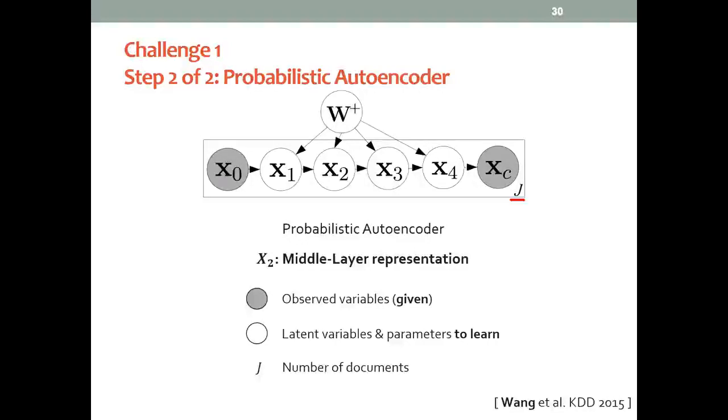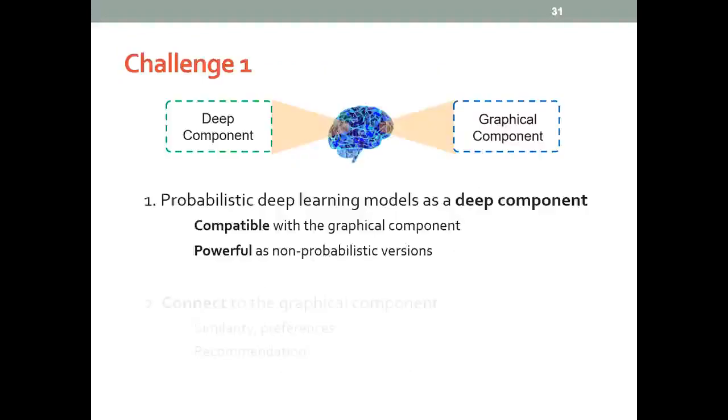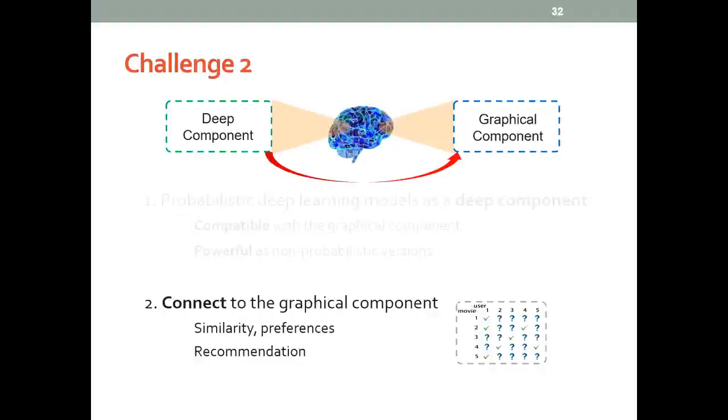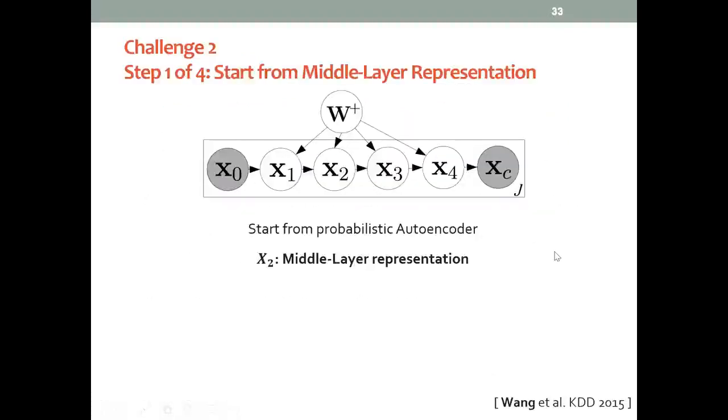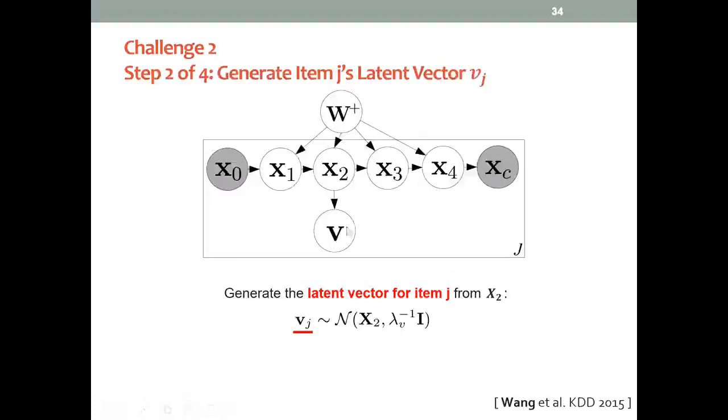Now that we have handled this first challenge, the next one is how to connect it to the graphical component to perform the recommendation. Let's start with this probabilistic autoencoder. We're going to start with this middle layer representation, and we will generate the latent factor for each item, Vj, from a Gaussian distribution centered at this representation.